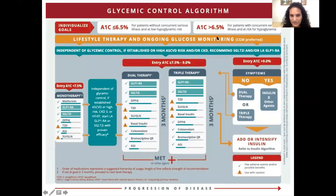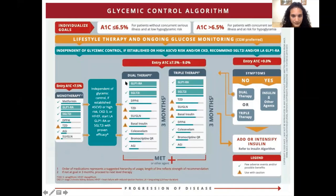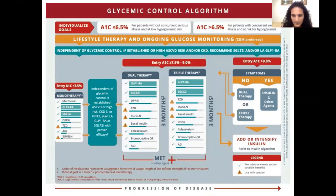The ACE guidelines individualize goals based on A1C. For A1C less than 7.5, they suggest you can start any of these as monotherapy — unless the patient has cardiac disease or kidney disease. For A1C 7.5 to 9, they actually suggest double or triple therapy. If A1C is really high, greater than 10, or if the patient has catabolic symptoms, you can start with insulin right away. Going back to Mr. Smith — no kidney disease, no heart disease — so any of these choices are fine.